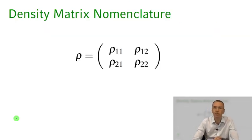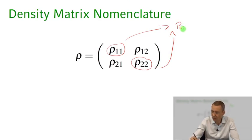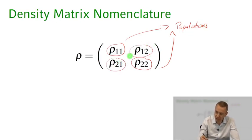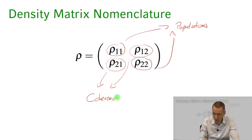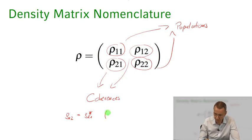Now some nomenclature regarding the matrix elements. The diagonal elements rho_11 and rho_22 describe the so-called populations of states one and two — that is, the probabilities of being in state one or state two. The off-diagonal elements rho_12 and rho_21 are the so-called coherences of our system. And because the density matrix is Hermitian, rho_12 is just rho_21 conjugated — rho_12 equals rho_21 star.